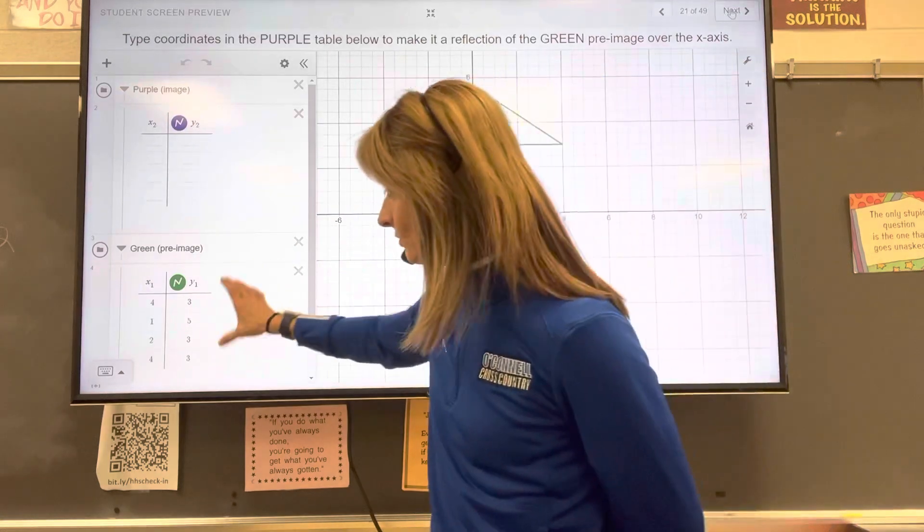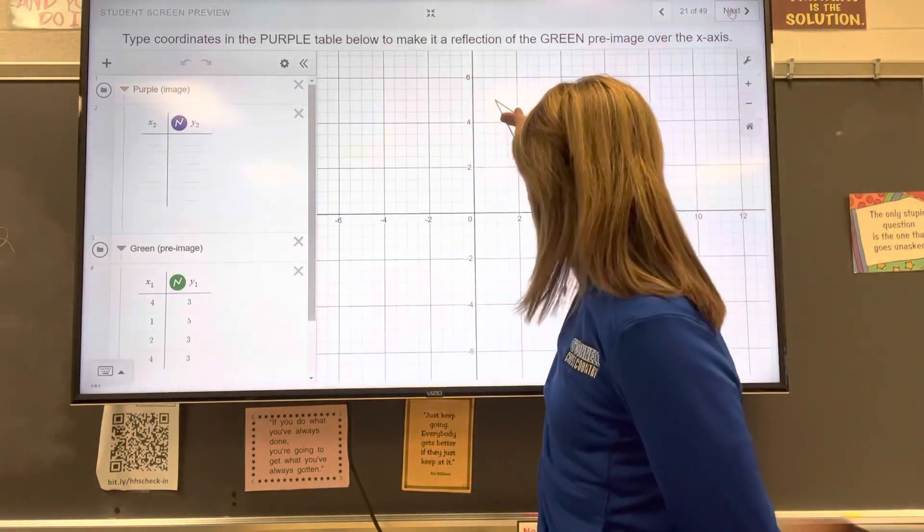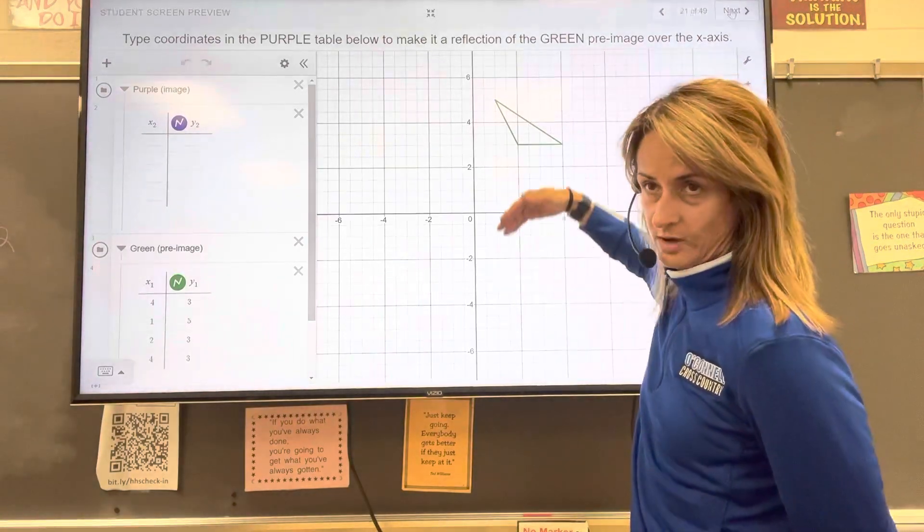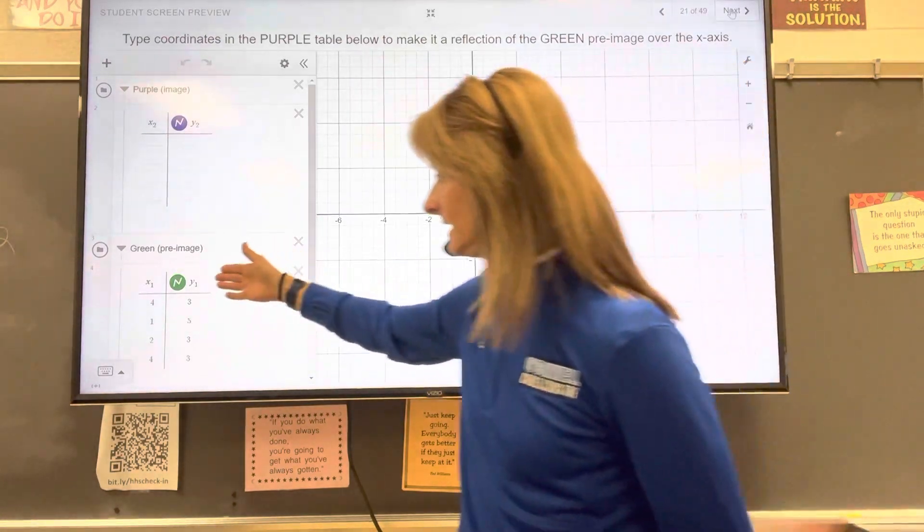So we're just going to take all those ordered pairs and we're going to change the y-value from positive to negative. Or if it was originally negative, we change it, the y-value to positive. But all the x-coordinates would stay the same.